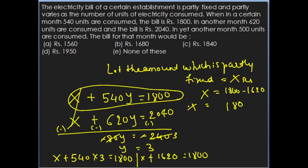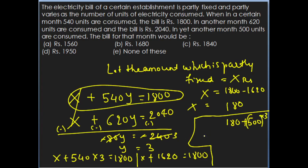So Rs. 180 is the partly fixed amount. Now find the bill when 500 units of electricity are consumed. Fixed amount is Rs. 180 plus 500 units into Y, and Y value is 3. So 500 into 3 is 1500, plus 180 equals Rs. 1680. Therefore Rs. 1680 has to be paid in that month.